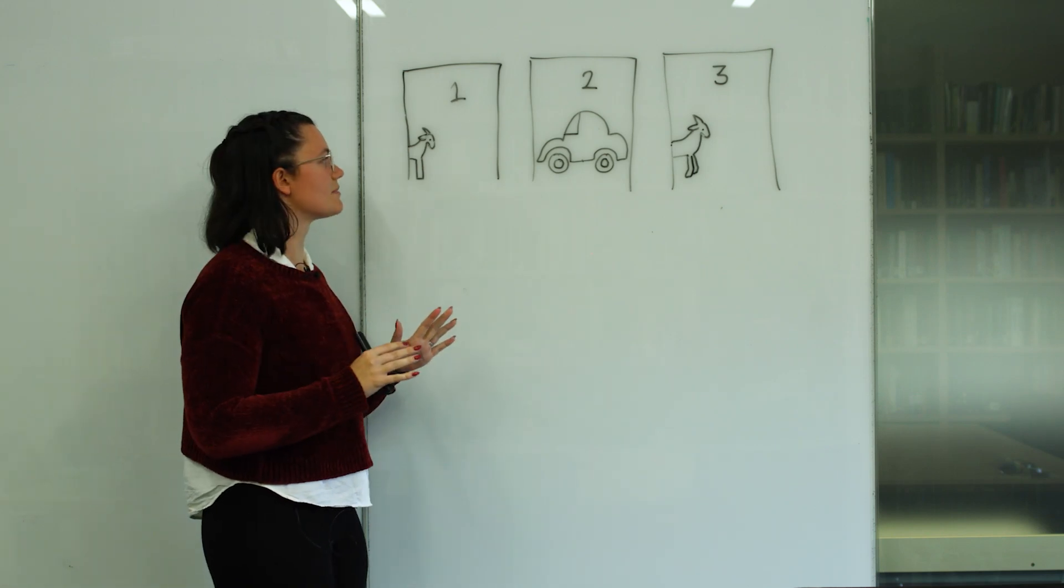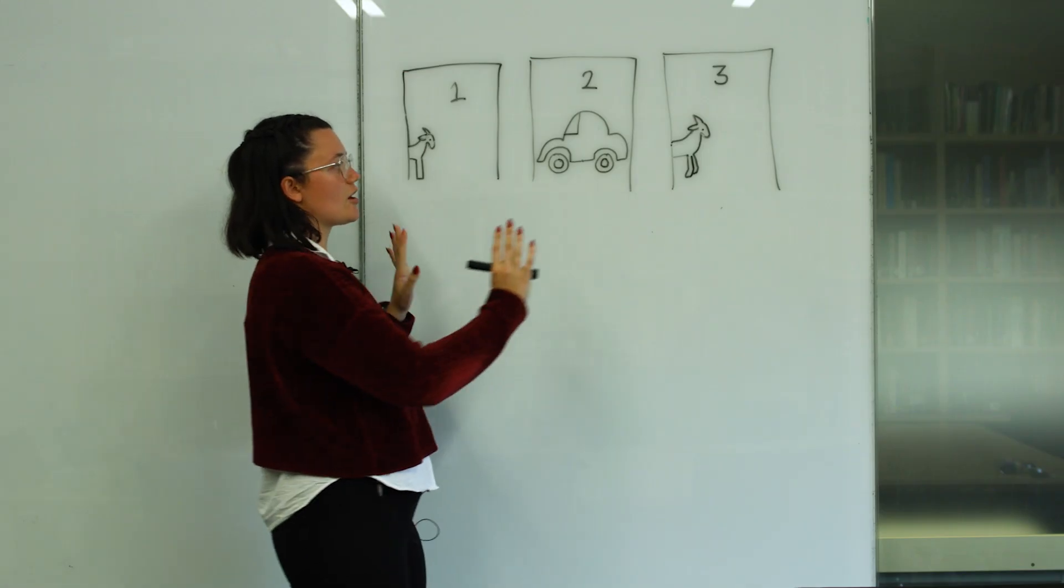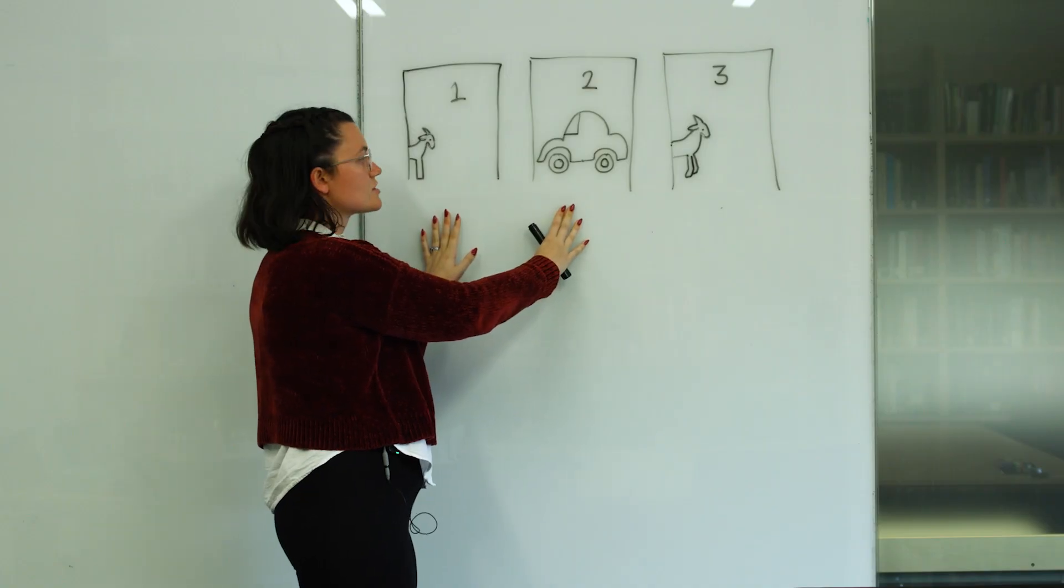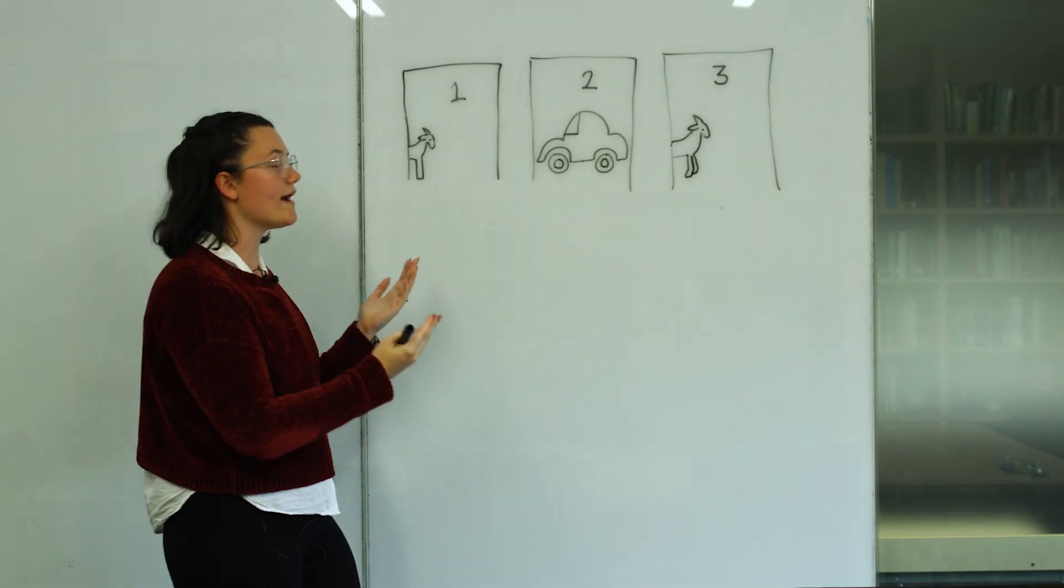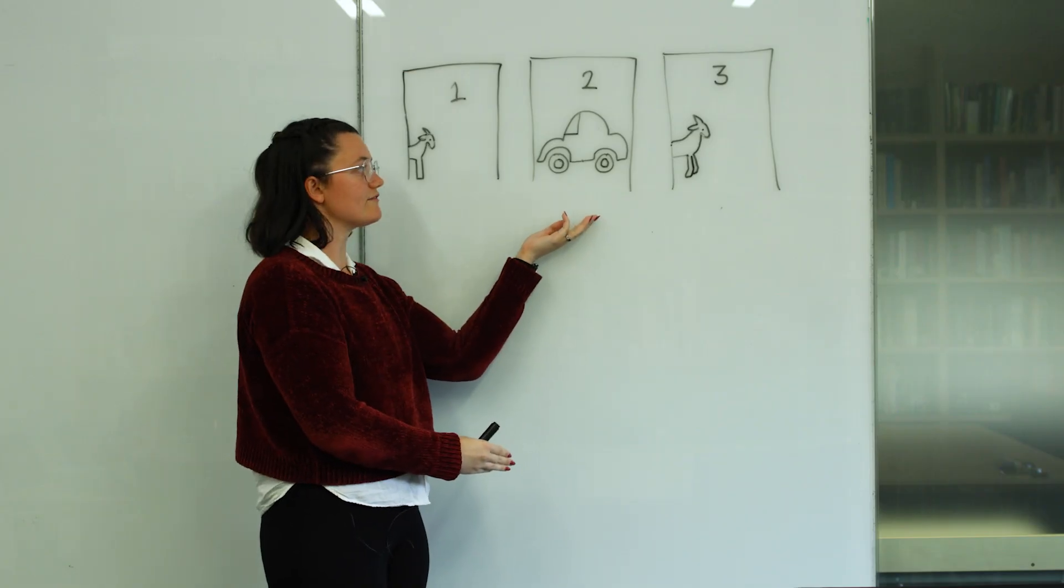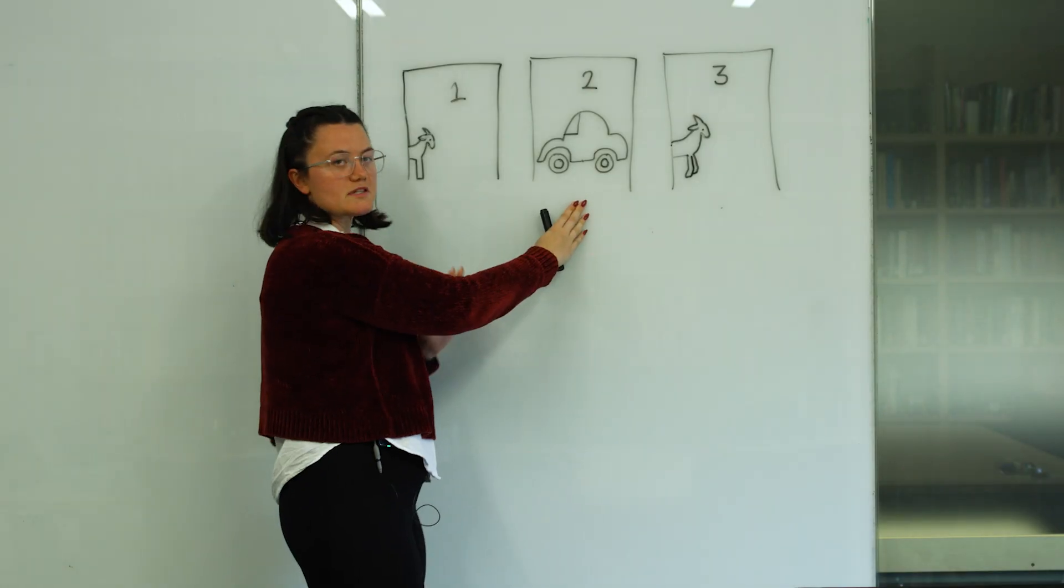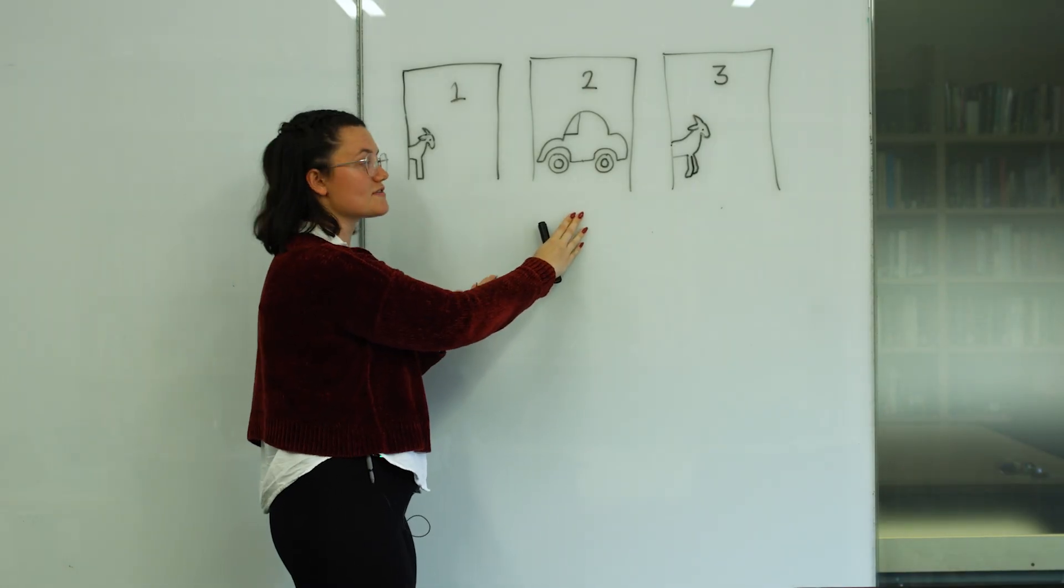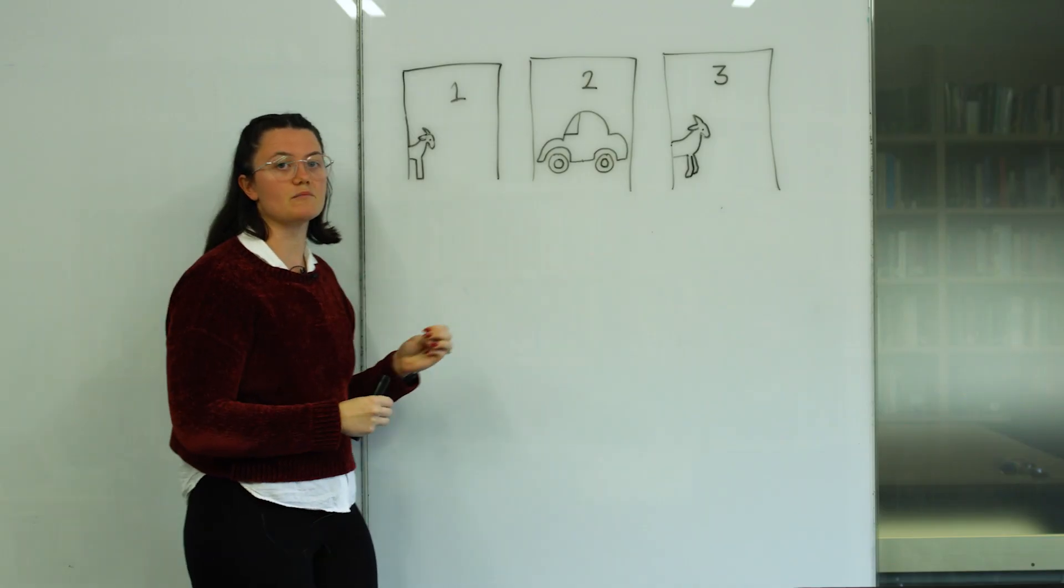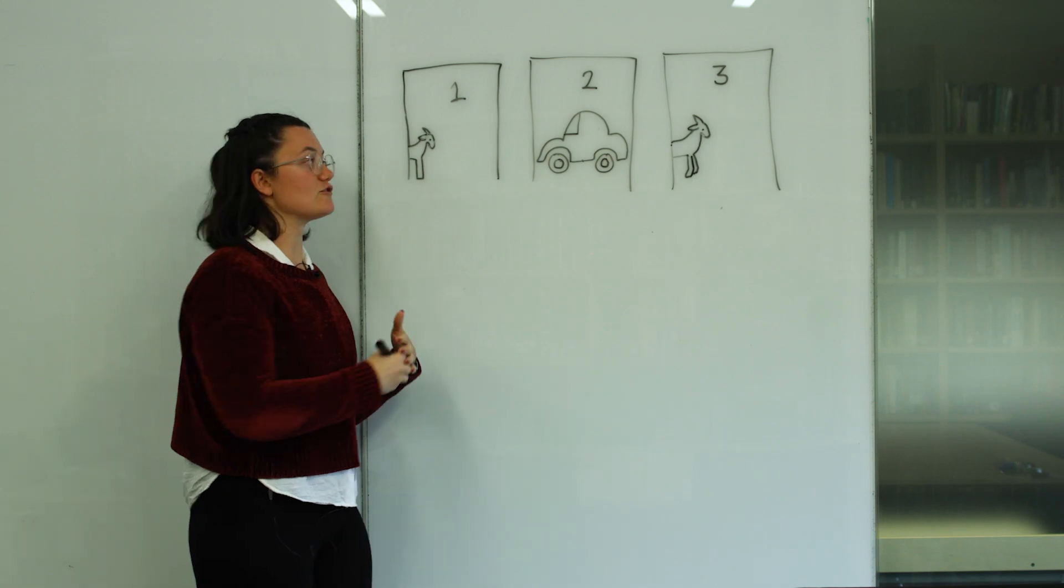So let's just think about this quite simply. If you picked door one and Monty opened door three, you're going to be better off if you switch. In the same way, if you picked door three, Monty would have to open door one. And again, you'd be better off if you switched. However, if you picked door two, it wouldn't matter which one Mr. Monty opened. And in this case, you'd actually be better off staying, but you're only better off staying with your choice in one out of the three examples that you've got here. So your probability of winning is always going to be higher if you switch.